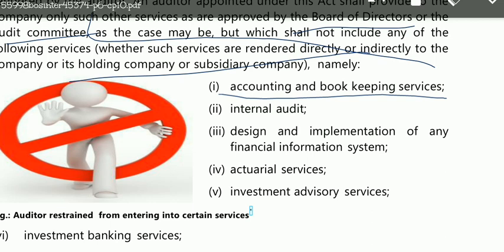If someone is doing accounting and bookkeeping, they cannot be the auditor — self-interest threat. Similarly, if someone is the internal auditor, they also cannot be the external auditor. Internal audit is like team work with an internal leader checking internally, but the final audit must be by an outsider or judge. True and fair view is not possible if the same person is internal auditor and external auditor. That is why internal auditor and external auditor must be separate.